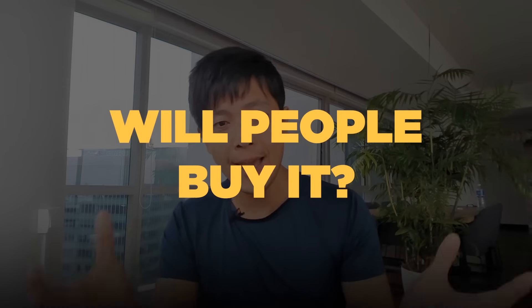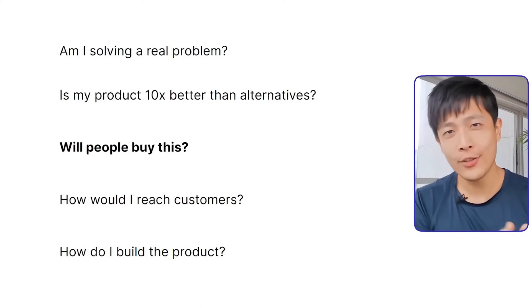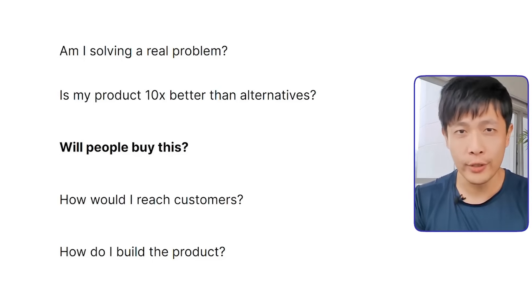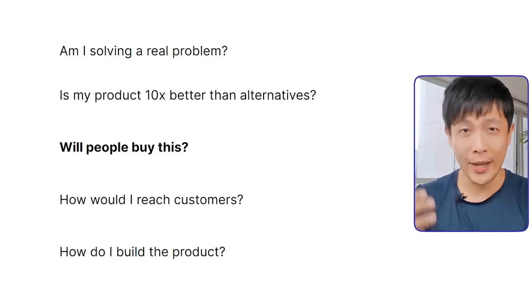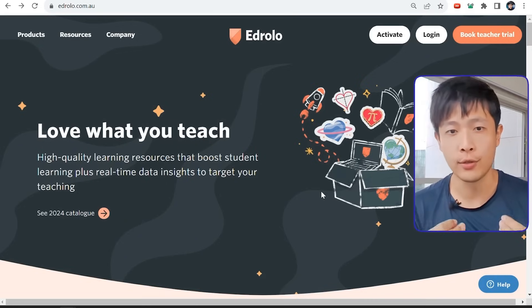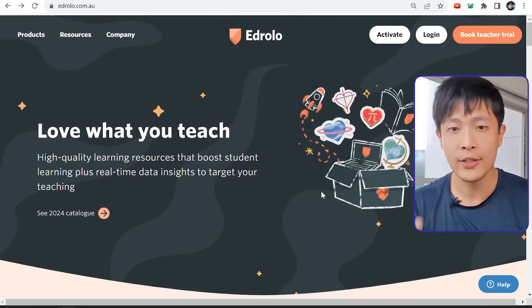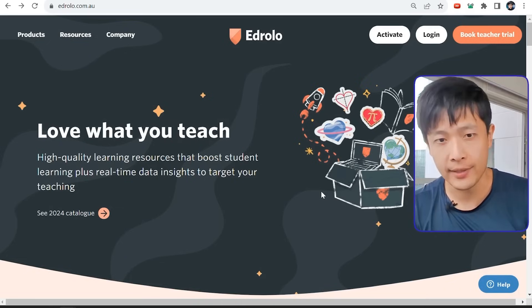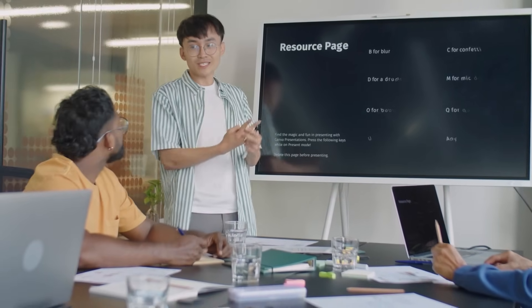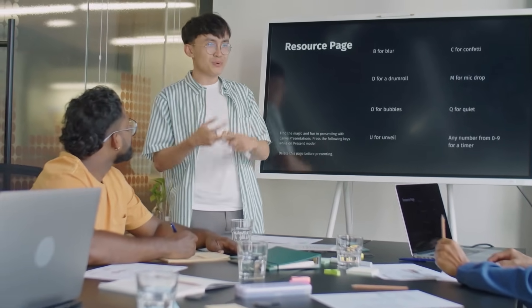The next thing to test and de-risk before you build the product is: will people buy it? At ContactOut, we couldn't get people to buy before we built it, but we did cold email a lot of recruiters, had them sign up to a waitlist, then spent four weeks building a prototype and were able to sell that. Ed Roller provides learning resources to high schools — they sold to schools using a PowerPoint presentation and closed thousands of dollars in business before they had any learning resources created.